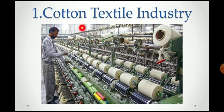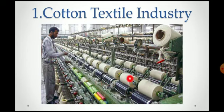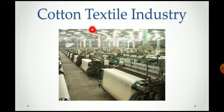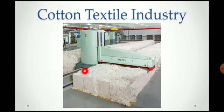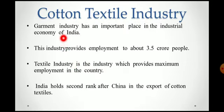Number one industry is cotton textile industry. Cotton textile industry is known as an agro-based industry because it gets raw material from agriculture. You can see the picture of cotton textile industry — we can also call it a cotton textile mill. This is another picture of cotton textile industry, where the cotton clothes are made. Now we will learn about cotton textile industry in detail.